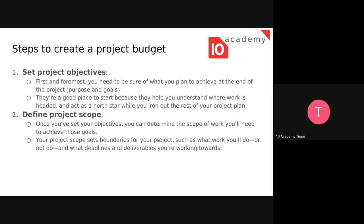The second step is to define the project scope, because everything depends on time and resources. Once you have set your objectives, you can determine the scope of work needed to achieve those goals. Your project scope sets boundaries for the project — such as what work you will or will not do, and the deadlines and deliverables you are working towards.